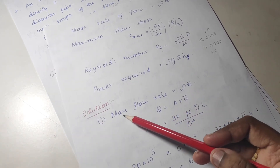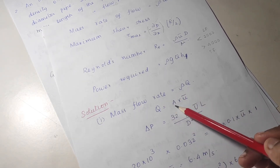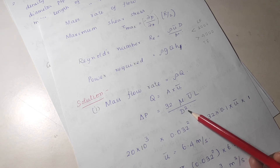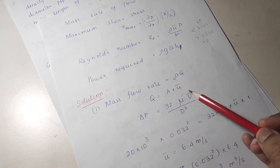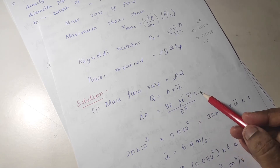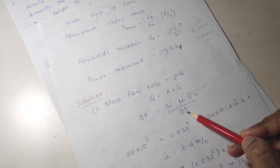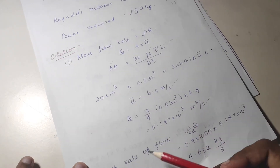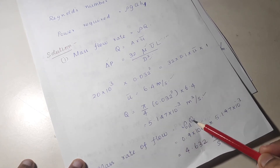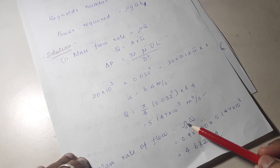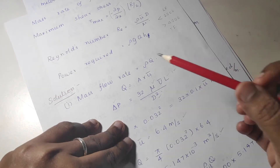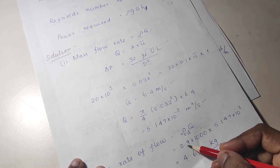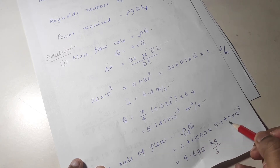For the solution: mass flow rate equals rho Q. Find Q from area into velocity. Find velocity from delta p equal to 32 mu u-bar L divided by d squared — viscosity, pressure drop, length (taken as 1 meter), and diameter are all given, so u-bar can be found. From u-bar find discharge Q. Then mass flow rate equals density into discharge. Density of oil equals specific gravity into density of water, so 0.9 into 1000 into discharge gives the answer.